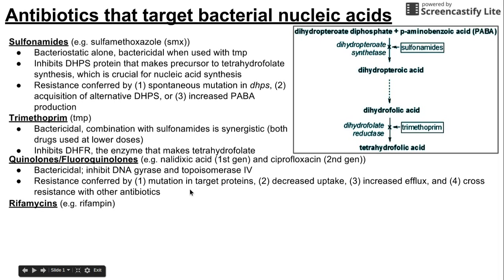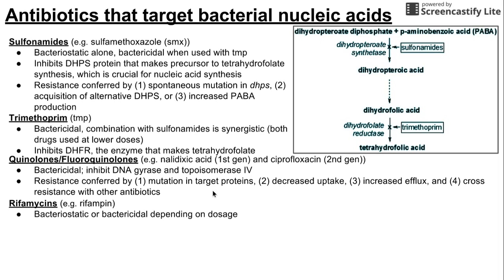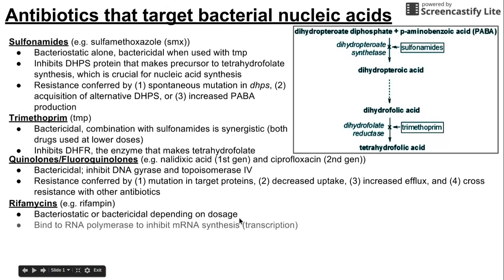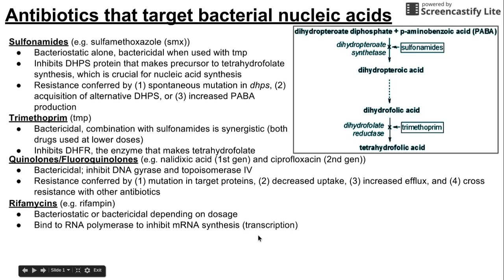The next group of antibiotics is rifamycins, and one example is rifampin. These can be either bacteriostatic or bactericidal depending on the concentration and dosage administered. They work by binding to RNA polymerase, which makes mRNA from DNA — the process of transcription. So rifamycins are essentially preventing transcription.